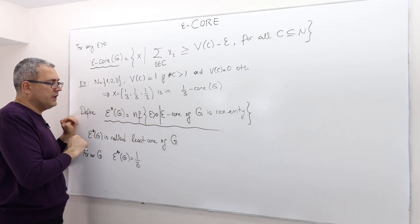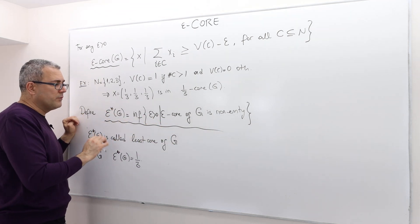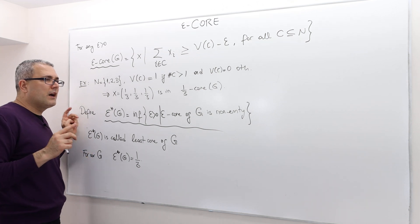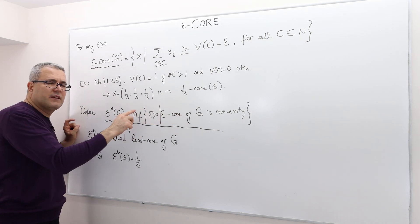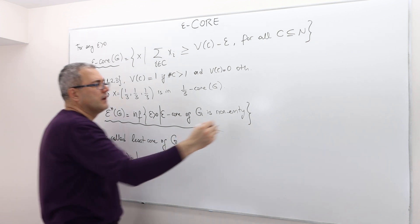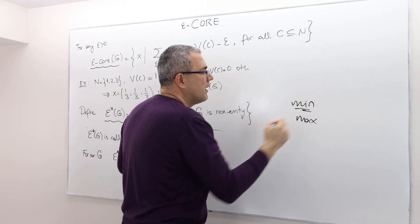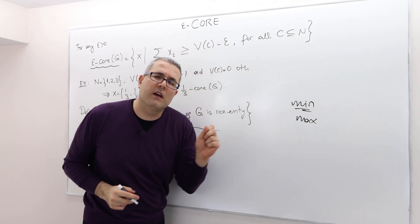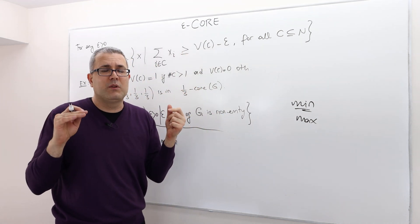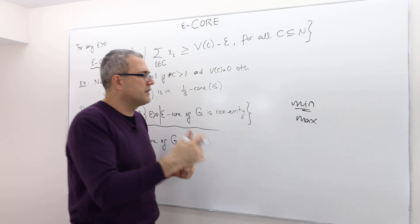The Epsilon star G is the infimum. So infimum is sort of the minimum of a set. But the thing is, the min or max are not well-defined objects when the set is, for example, not closed.